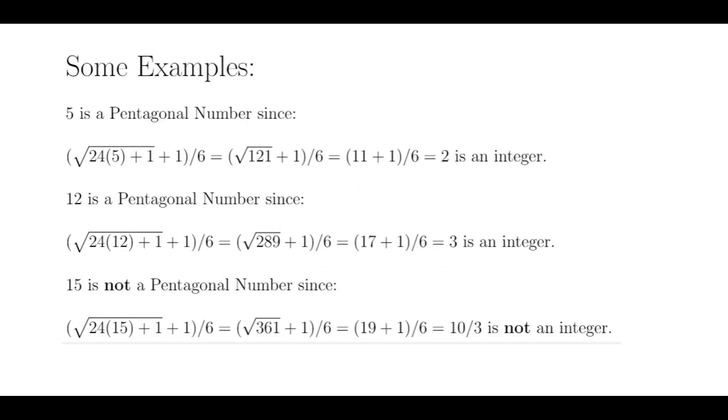So let's try our test on some positive integers. For n equals 5, we plug in 5 times 24, add 1, take the square root, add 1 and divide by 6, and we get 2, which is an integer. Therefore, 5 is a pentagonal number.